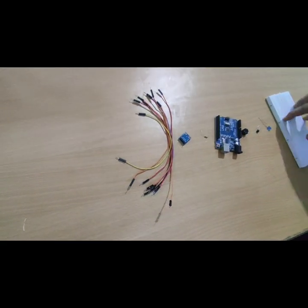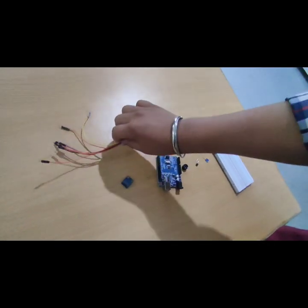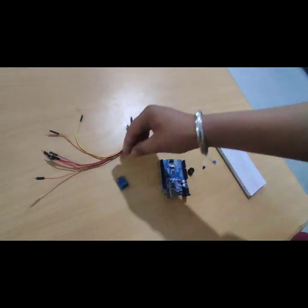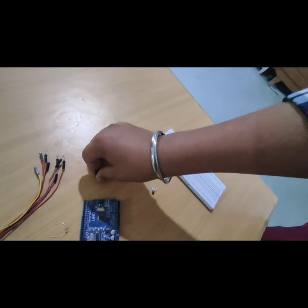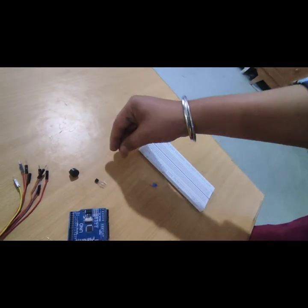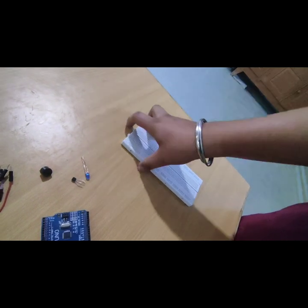The material required in our project are: jumper wire 8B6 male-to-male, accelerometer 1 piece, resistor 220 ohm, Arduino 1 piece, buzzer 1 piece, transistor B6 BC547, LED 1 piece, and lastly, breadboard.